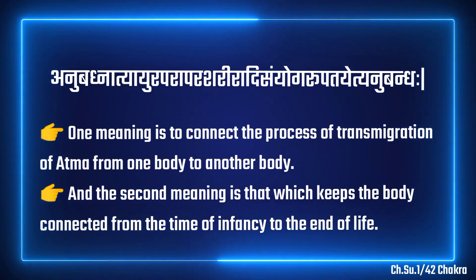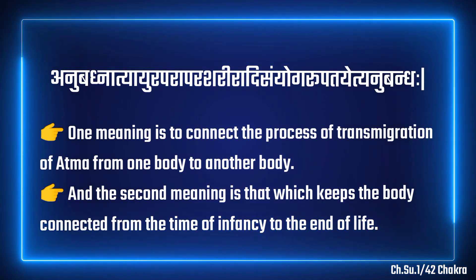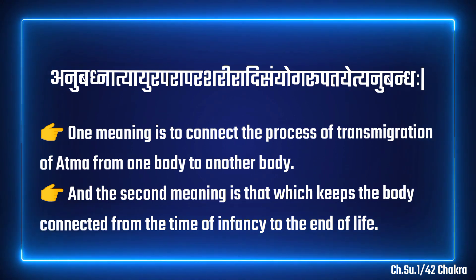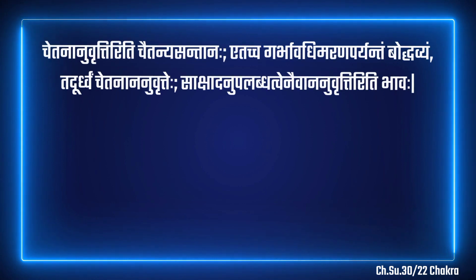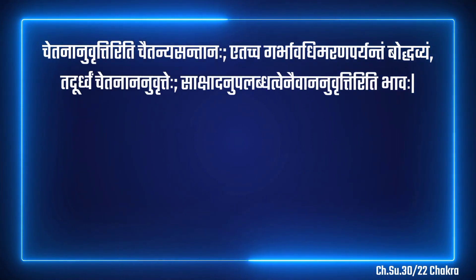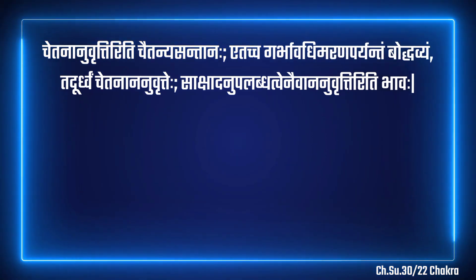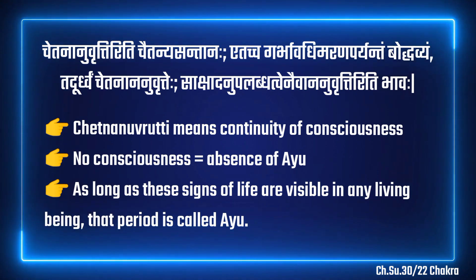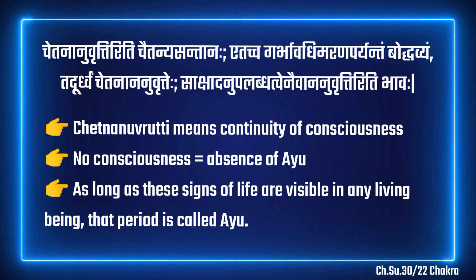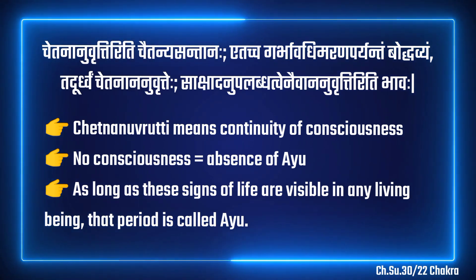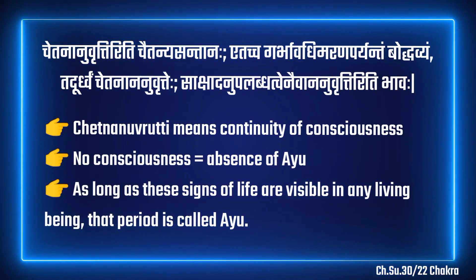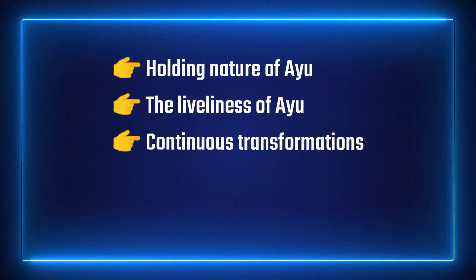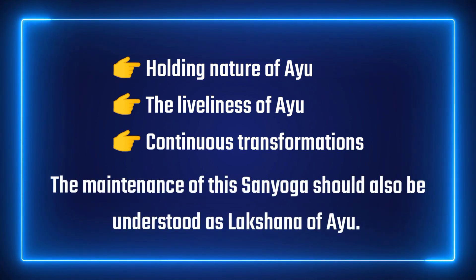The word anubandha is used in two ways. One meaning is to connect the process of transmigration of atma from one body to another. The second meaning is that which keeps the body connected from the time of infancy to the end of life. In the 30th chapter, the word Chetananu vritti is also mentioned as a synonym of Ayu. Chetananu vritti iti chaitanya santanaha — Chetananu vritti means the continuity of consciousness starting from pregnancy till death period is called Ayu. If consciousness is not there, it is considered the absence of Ayu. As long as these Lakshan of Ayu are visible in any living being, that period is called Ayu.